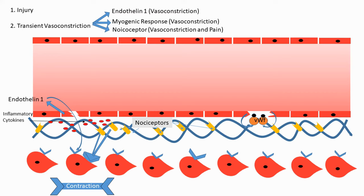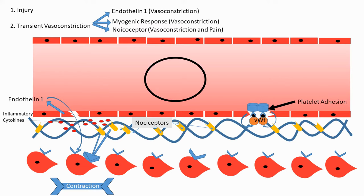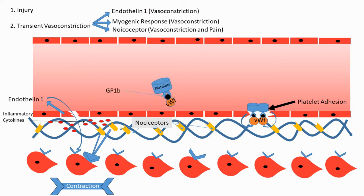Once von Willebrand factor is released, it binds onto the damaged subendothelial collagen. The other end of the von Willebrand factor binds onto the platelets. Platelets use their GP1b receptor to bind onto the von Willebrand factor. This process of platelets binding onto von Willebrand factor is referred to as platelet adhesion.